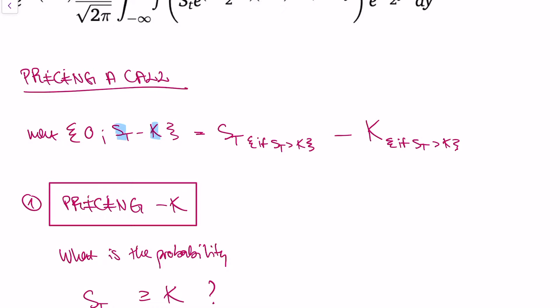What we're going to do now is price these parts separately. First, we're going to price the k component, then we're going to price the St component. And if we have both prices, we can just use the price for St minus the price for k, and we have our formula.